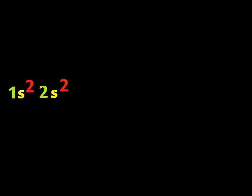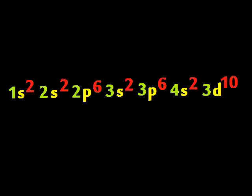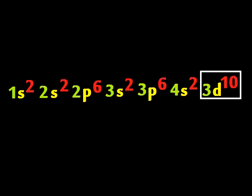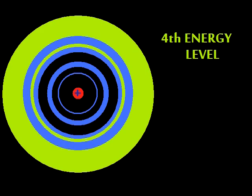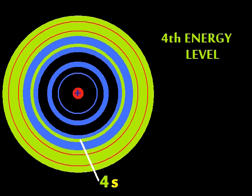And it's 1s2, 2s2, 2p6, 3s2, 3p6, 4s2, 3d10. Why does 4s fill up before 3d? Because the wave function overlap is enormous, you see — 4s has less energy than the supposedly lower 3d.